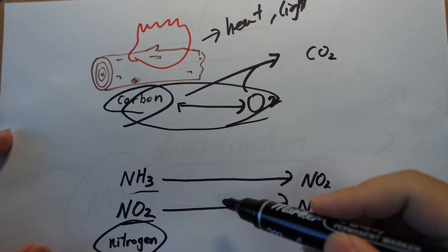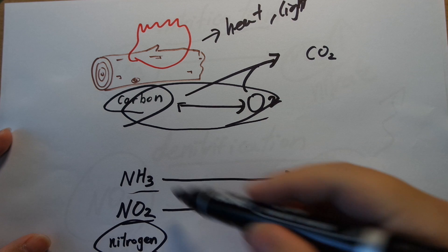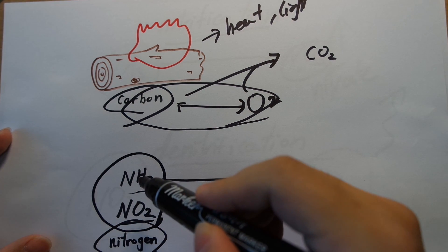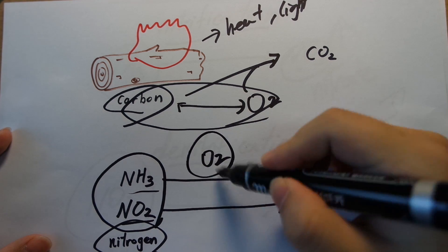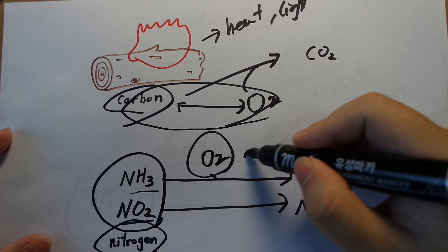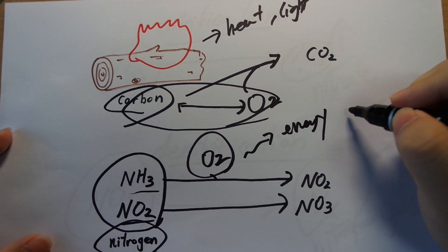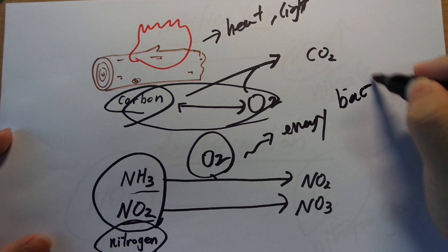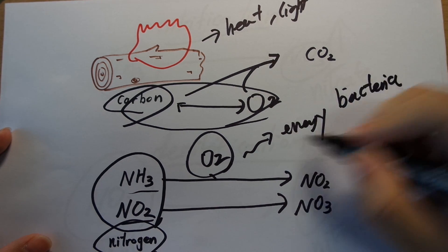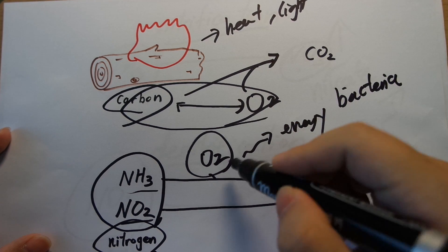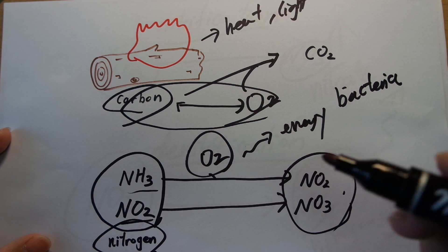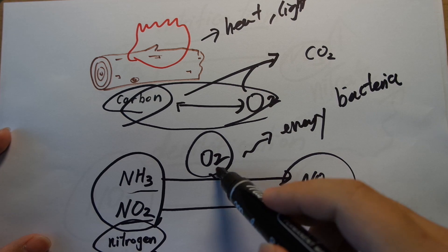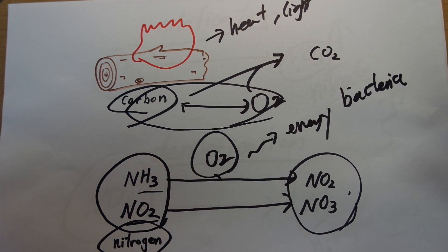The oxygen has to come together with this carbon and together they are able to release the energy that is stored inside the wood. It's the same story for nitrification. In order to release the energy stored inside ammonia and nitrite, you need the help of oxygen, and then you can release that energy which is consumed by the bacteria — they eat that energy with the help of oxygen and that's how you get nitrate. So that is what nitrification is. But why do you need oxygen? What is the purpose of oxygen here?